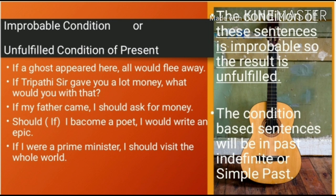For example: 'If a ghost appeared here, all would flee away' — these are imagination-based sentences. 'If Tripathi sir gave you a lot of money, what would you do with that?' The first sentence is in past indefinite and the other is in future indefinite, but we use 'would' instead of 'will.' More examples: 'If my father came, I should ask for money.' 'Should I become a poet, I would write an epic' — here 'should' can be used in place of 'if' at the beginning. 'If I were a prime minister, I should visit the whole world.' These are improbable condition sentences.